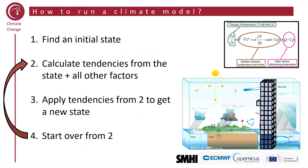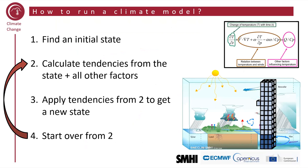It's quite simple in principle. You just try to find an initial state for all of the different grid boxes in your model. Then you calculate tendencies using the equation I just showed — and other similar equations for motion — and you apply those tendencies to the state to get a new model state, say half an hour into the future. Then you restart again from the second step and integrate forward in time. This is how both weather forecast models and climate models work.